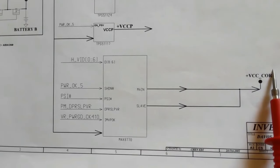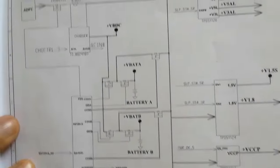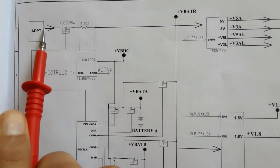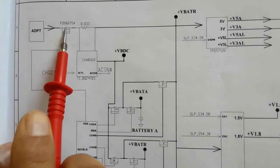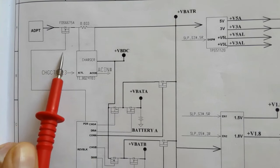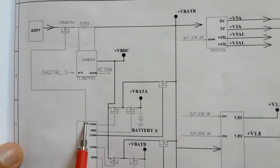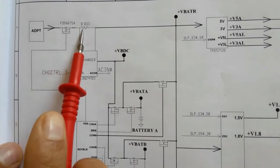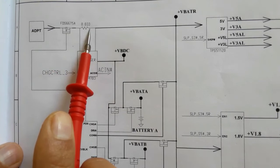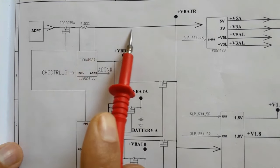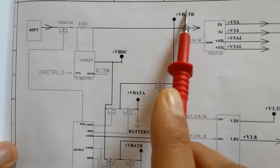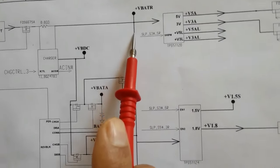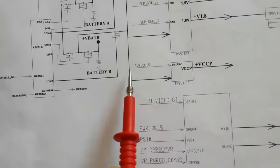Let's begin with the adapter. The 19 volt will pass through MOSFETs, which are activated by a control signal from the charge IC. Then the 19 volt will pass through the current sense resistor, and after that we get VBAT — the main voltage that will be distributed to the whole motherboard.